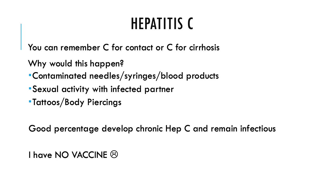A key difference with hepatitis C is that it usually progresses to cirrhosis. Most people with hepatitis C develop chronic hep C, remain infectious, and have a lot of liver disease. A lot of people can recover from hepatitis B without chronic liver damage, whereas with hepatitis C you see more chronic liver problems. The other big difference is there's no vaccine for hepatitis C.